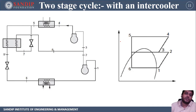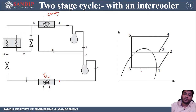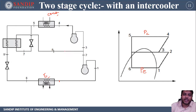Now talking about the two stage cycle. In a two stage cycle there must be some intermediate pressure. There is an evaporator pressure, a condenser pressure, and between these two there is an intermediate pressure line. If there are multiple pressures — higher pressure, lower pressure, and intermediate pressure — then we say that is a two stage cycle.